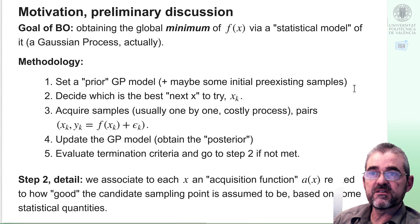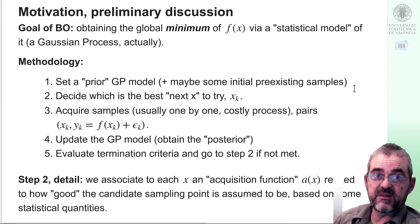This is the basic methodology: we get a prior and some pre-existing samples, we must decide which is the best, the most promising next sample to try and we acquire that sample, we update the Gaussian process model and repeat until our sample budget is exhausted.